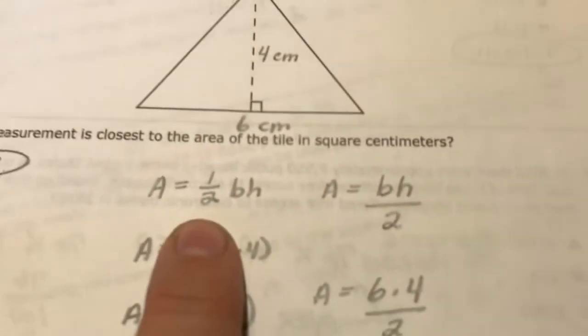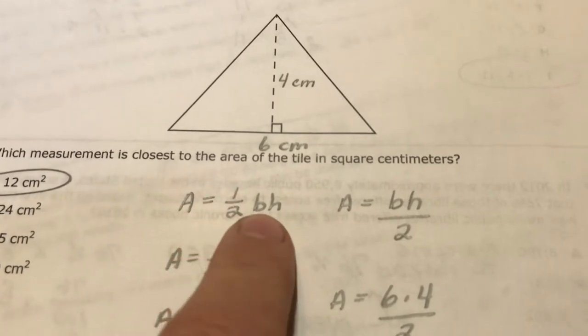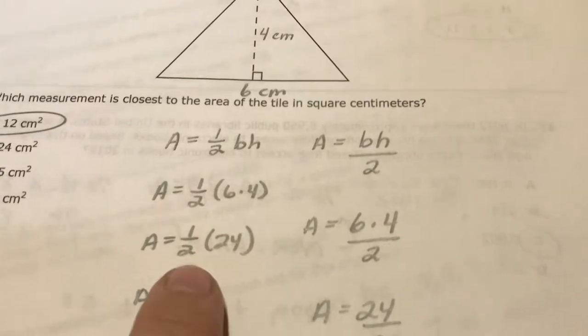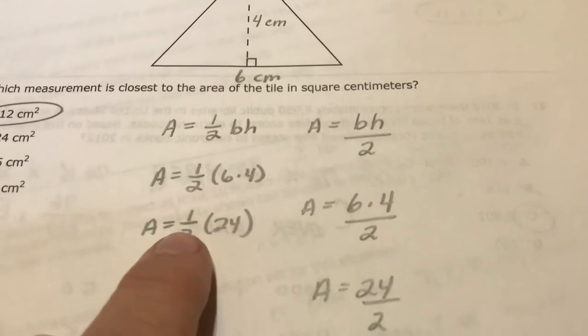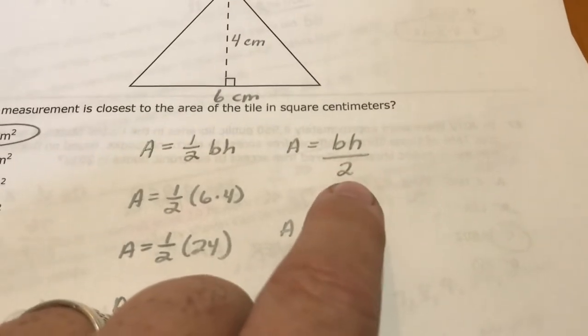Your two formulas on your formula chart for area of a triangle are area equals half times base times height, so half of 6 times 4. 6 times 4 is 24, half of 24 is 12. Or my version of the formula: base times height divided by 2. 6 times 4 divided by 2, that's 24 divided by 2, and that's 12.